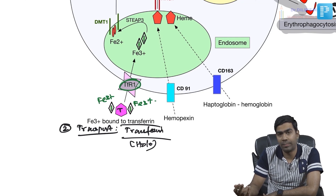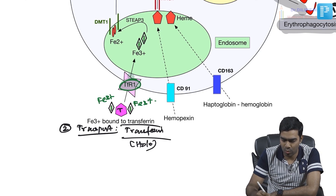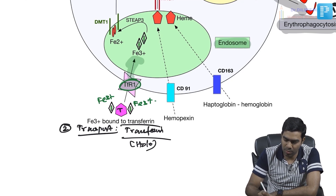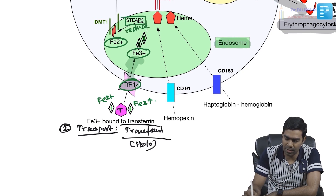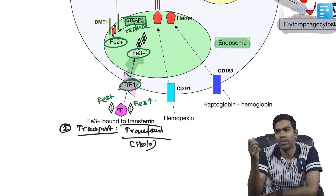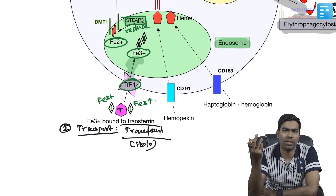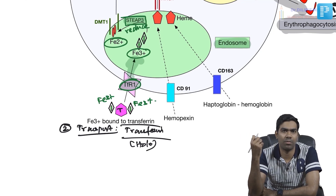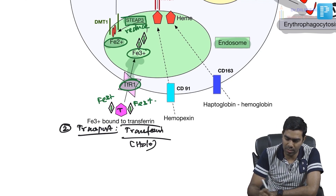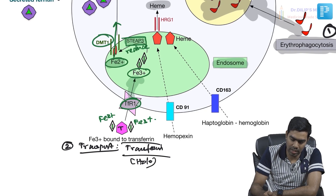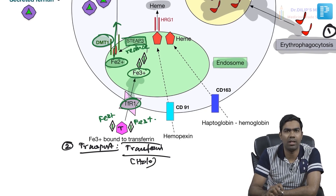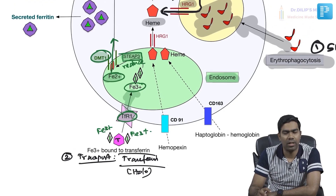Transferrin receptor 1 binds transferrin and endocytoses it inside. Once inside the endosome, Fe3+ is reduced to Fe2+ by an enzyme similar to the ferroreductase — cytochrome B-like enzyme — seen in intestinal iron absorption, referred to here as steap3. This Fe2+ is then moved out of the endosome into the intracellular compartment by DMT1, the divalent metal transporter 1.